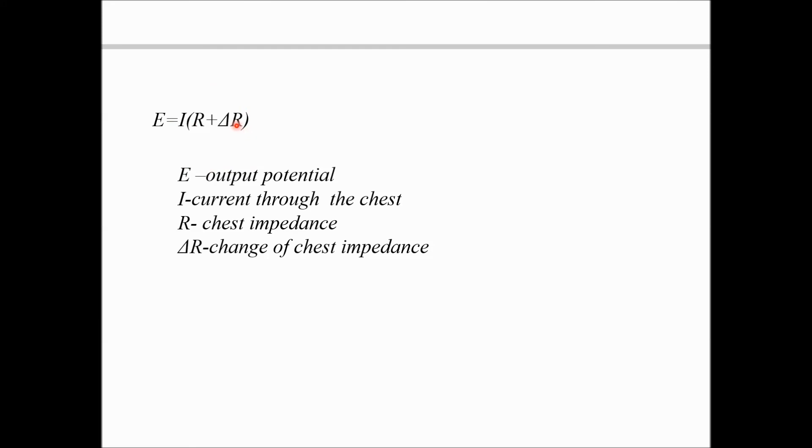From this equation, except delta R, all parameters are known. So we can find out the delta R which will be the change in chest impedance that should be measured in the case of an impedance pneumograph. Thank you.